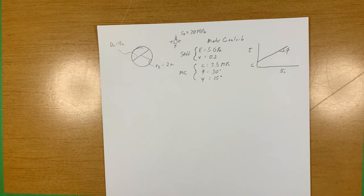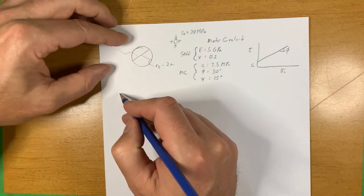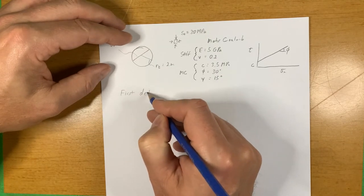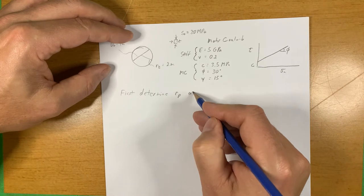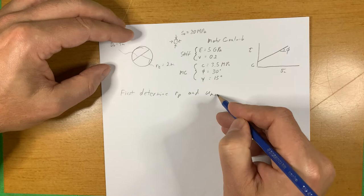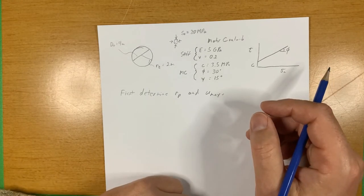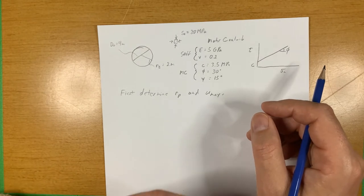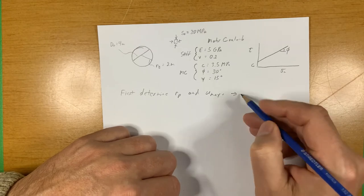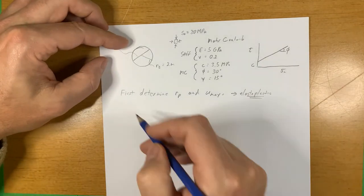So where do we start? Well, the first thing is to determine the radius of the plastic zone and the maximum displacement. We can use a numerical model, two-dimensional numerical model, or we can use some closed form analytical solution. The Kirsch solution does not apply because that's elasticity, but we have an elasto-plastic case.